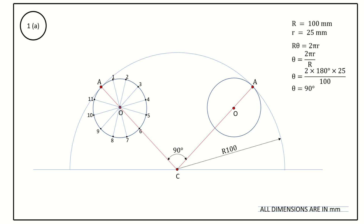Because we chose 12 points, also divide the angle into 12 equal parts. Take a compass with center point C and radius CO, and draw an arc from O to O (the center arc). Then divide this angle of 90 degrees into 12 equal parts — 90 / 12 equals 7.5 degrees per division.